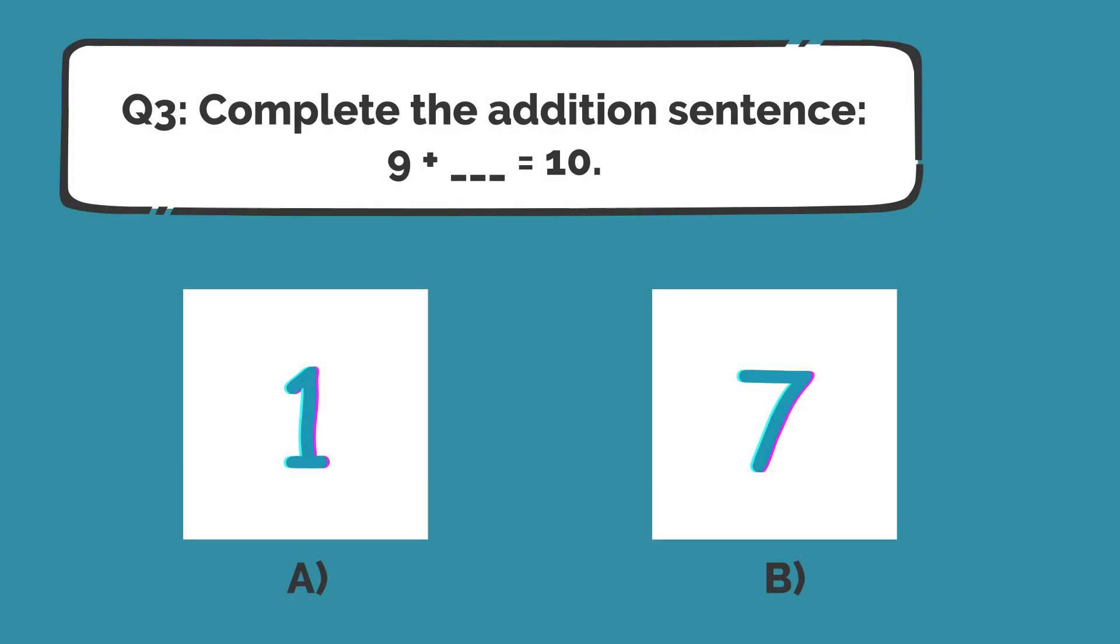Complete the addition sentence! 9 plus dash equals 10? Is it Option A or Option B? Think about it! Perfect! The correct answer is Option A, 1. 9 plus 1 is equal to 10.